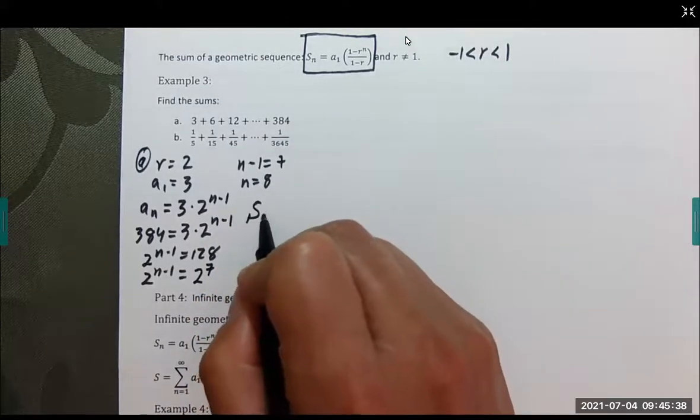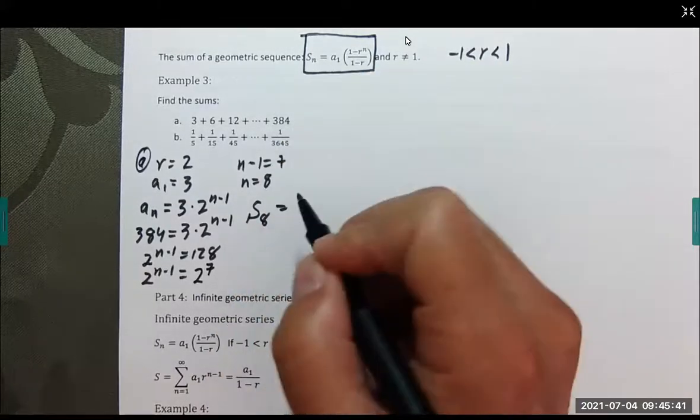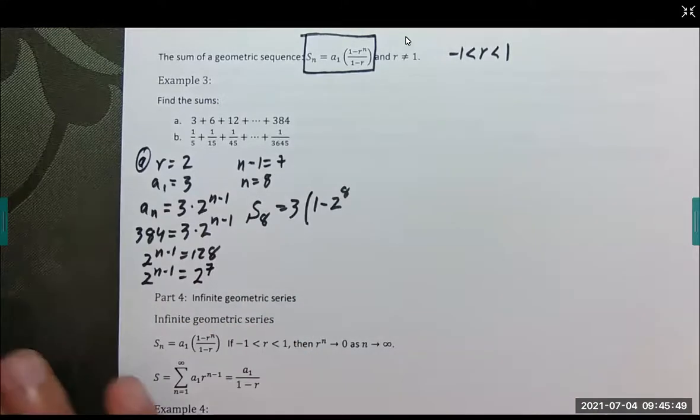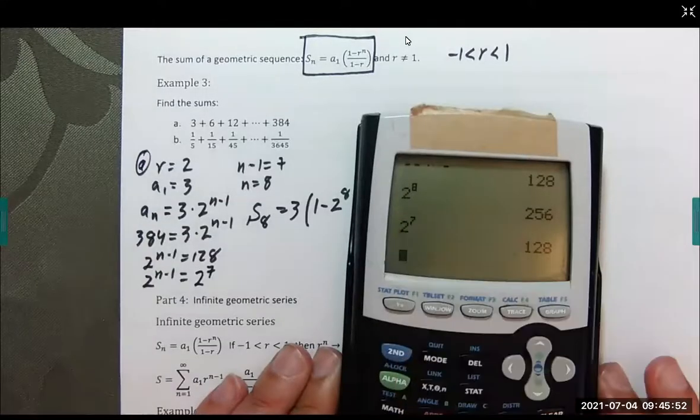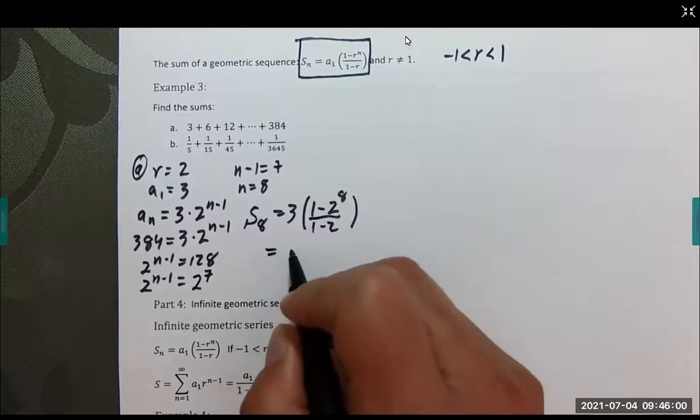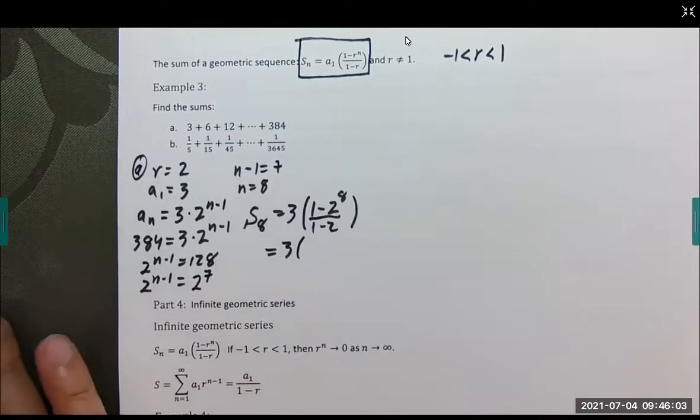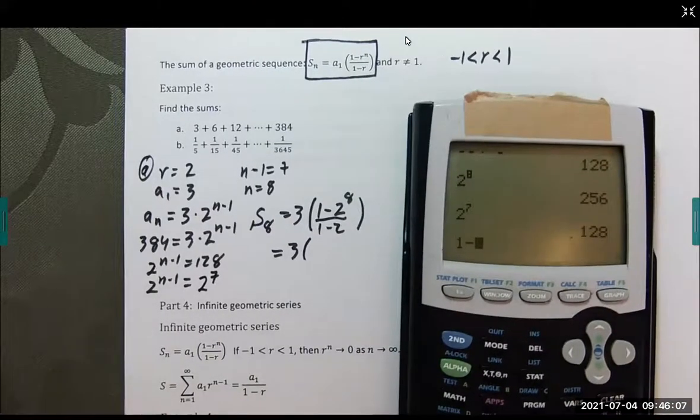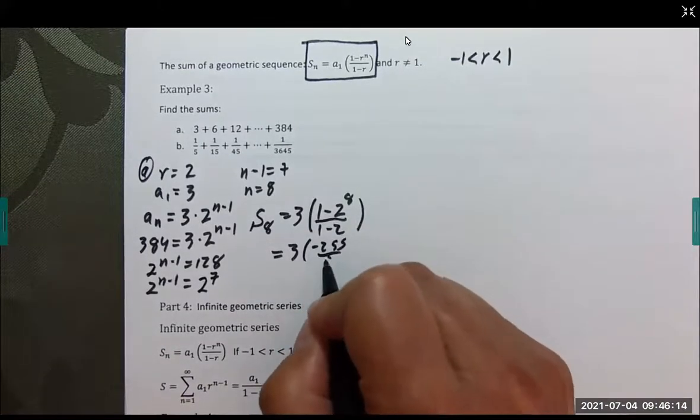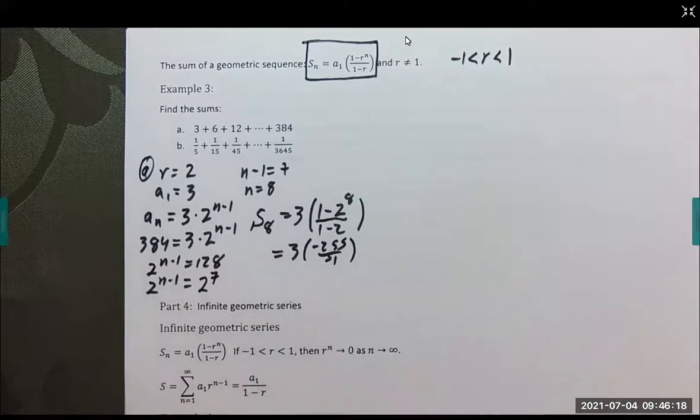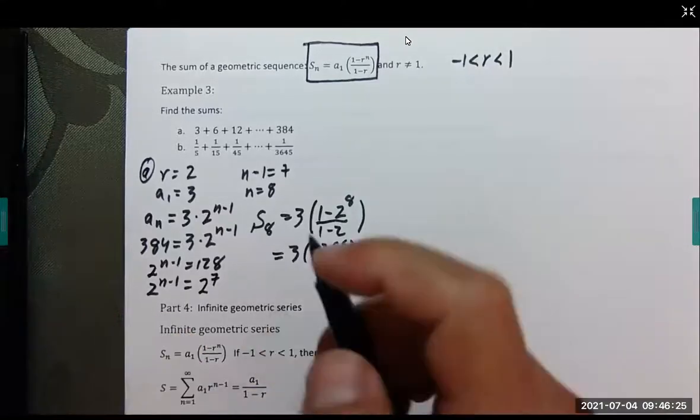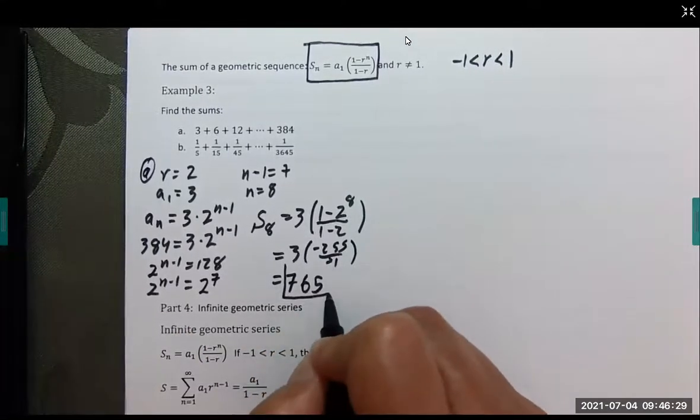Let's find S sub 8 using this formula. A sub 1 is 3 times (1 minus 2 to the 8th power) divided by 1 minus 2. 1 minus 2 is negative 1, and 2 to the 8th is 256. So negative 255 over negative 1 becomes positive 255 times 3, which is 765.